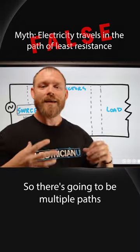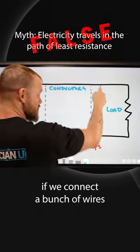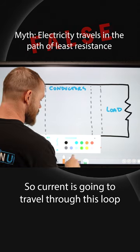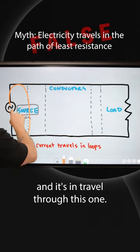It has a loop, right? So there's going to be multiple paths within there. If we were to connect a bunch of wires, then we have multiple loops. So current is going to travel through this loop and it's going to travel through this one.